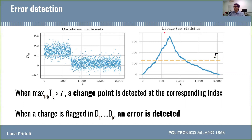The detected change point will be exactly the index maximizing the statistic. Note that the plot on the right refers to a test taken when K is the last iteration of the attack, which in our case is 2048. But in practice, the test will be executed after each iteration in order to have online detection. Our error detection procedure finds an error whenever a change point is detected in the sequence of distinguisher values by the CPM.